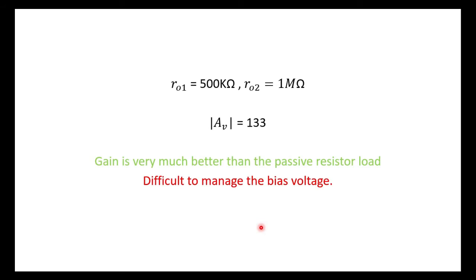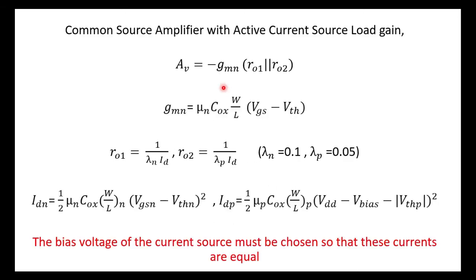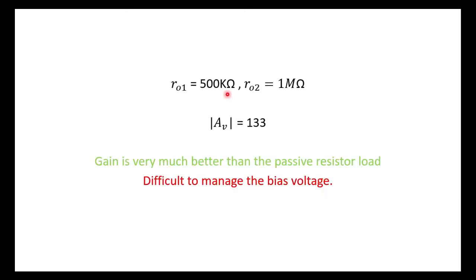So this is how we calculate. And finally we have ro1 and ro2 we have to calculate. We have that equation: 1/(λn × Id) and 1/(λp × Id). We know λn and λp, we calculated Id, and if you do that you will get 500 kilohms and ro2 as 1 megohm. With these values I'll get Av as around 133 approximately. It may vary a little bit. We have to simulate this in LTSpice and see how it works.